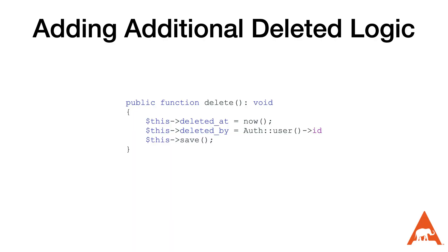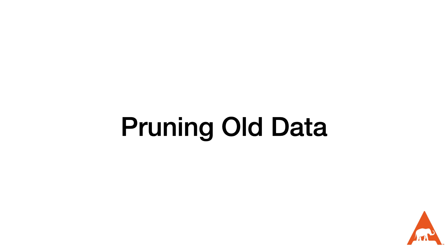To do this, I add a deleted_by column to the model and then create logic inside of the delete function that sets the deleted_at and deleted_by columns to the correct values and then saves the results. Ultimately, we're not going to want to have this data live in our database forever because it can impact performance as the tables get larger and larger. To help with this, Laravel provides the Illuminate Database Eloquent prunable trait, which provides a helpful solution to automatically prune data when it ages out of the window that we want.